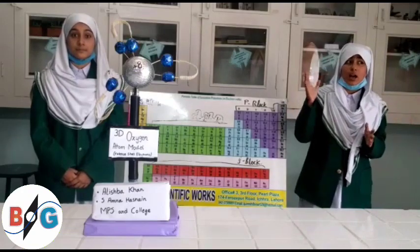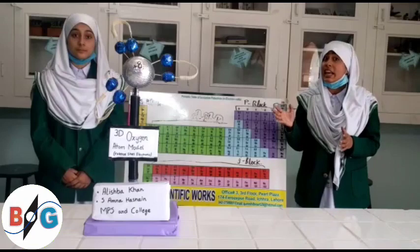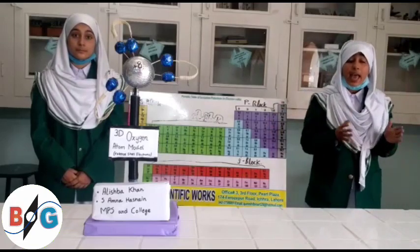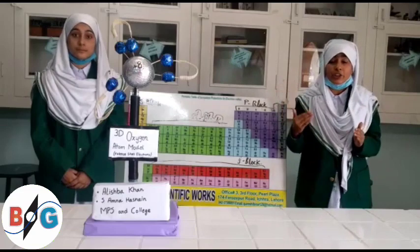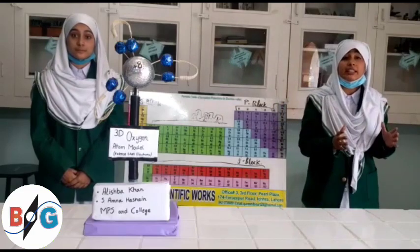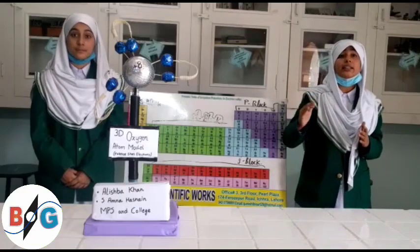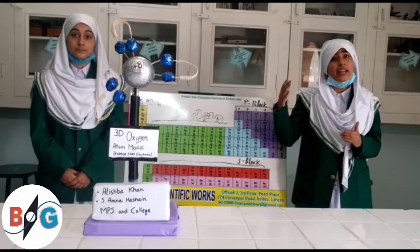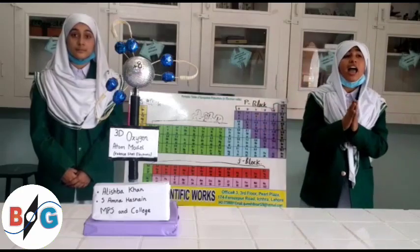We say that oxygen is paramagnetic in nature. Why is it paramagnetic? When we say it is paramagnetic, it means that it has a relative effect in a magnetic field, and this is due to the reason that it has unpaired electrons in its higher energy orbitals.